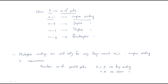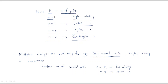For simplex winding, M equals 1. For duplex winding, M equals 2. For triplex winding, M equals 3. For quadruplex winding, M equals 4. Multiplex windings are used only for very large current machines.